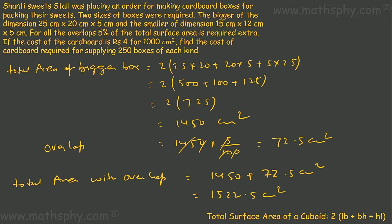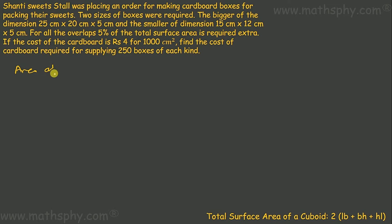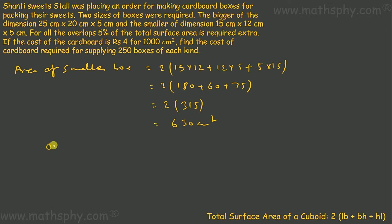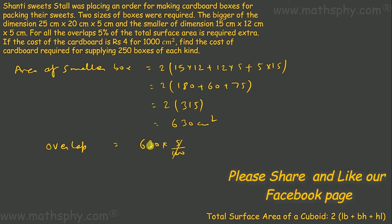Now let's calculate the area of the smaller box. The area would be 2 × (15×12 + 12×5 + 5×15). This gives: 15×12 = 180, 12×5 = 60, 5×15 = 75. So this will be 2 × (180 + 60 + 75) = 2 × 315 = 630 cm². This is the area of cardboard required to make small boxes without overlap.